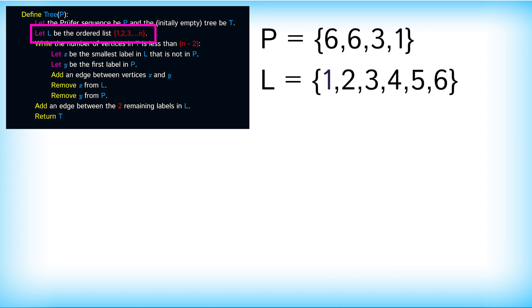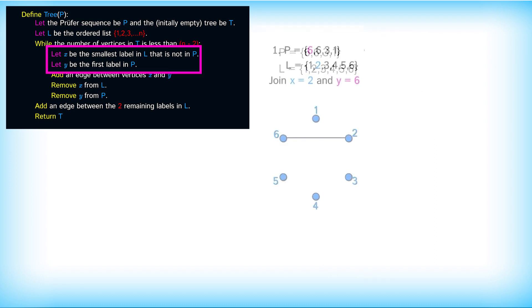So first step we need our list l which is 1, 2, 3, 4, 5, 6. x should be the smallest label in l that's not in p. In this case 1 is in p so x would be 2. y would be the first element of p and that's 6.